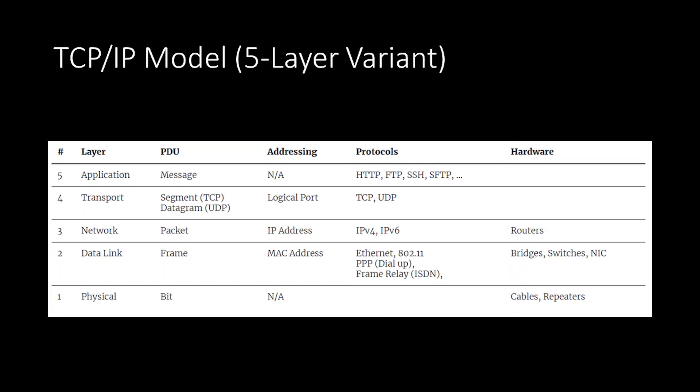The Internet Protocol Suite, or TCP/IP conceptual model, which has four and five layer variants, is what is primarily used to model the internet nowadays. It's a more streamlined model with presentation and session layer functionality combined into the application layer. The five layer variant includes: physical, data link, network, transport, and application. The four layer variant removes the physical layer, citing that the Internet Protocol Suite deals with protocols used to encode and decode messages, not the hardware itself. Throughout this course I will use the five layer model, but we'll avoid using layer numbers and reference each layer by its name.